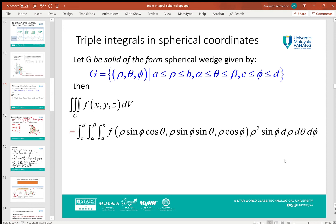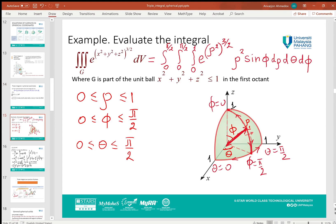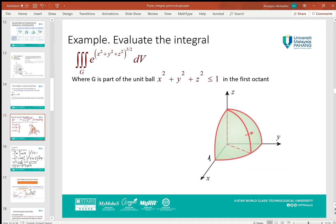Let's consider the following example where the function is a spherically symmetric function in the argument: e to the power (x² + y² + z²)^(3/2), and the integration region is the part of the unit ball of radius 1 in the first octant, as you can see in the picture here.